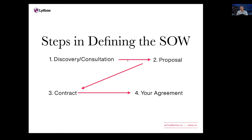Once you have all those deliverables, jump into the proposal and list them all in detail. After sending the proposal, give the client a chance to review it — ask if it's okay, if anything needs to be added or removed. Once you've agreed on the list, make the contract with that exact agreed list in detail. That's your agreement — what you hold on to throughout the whole project.